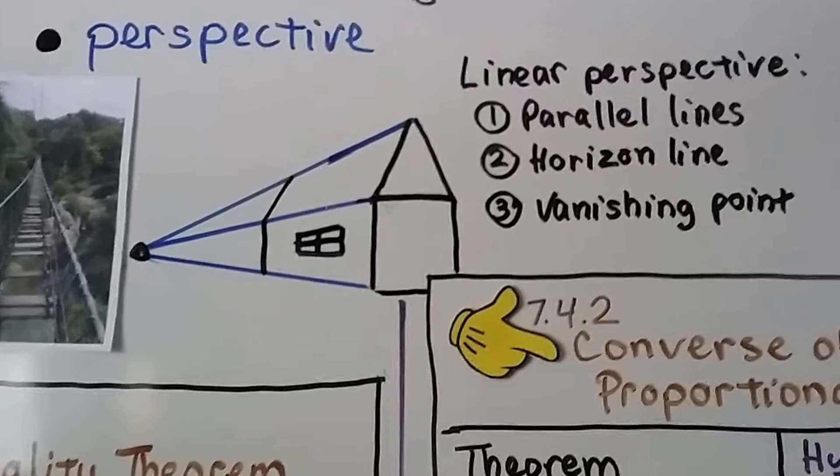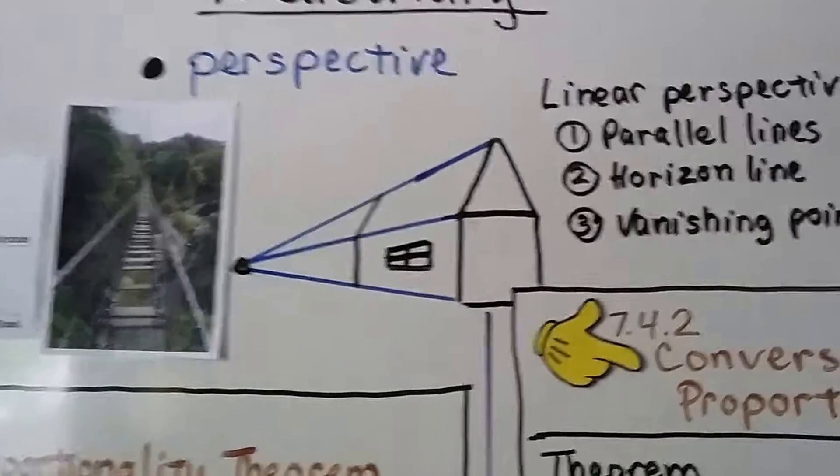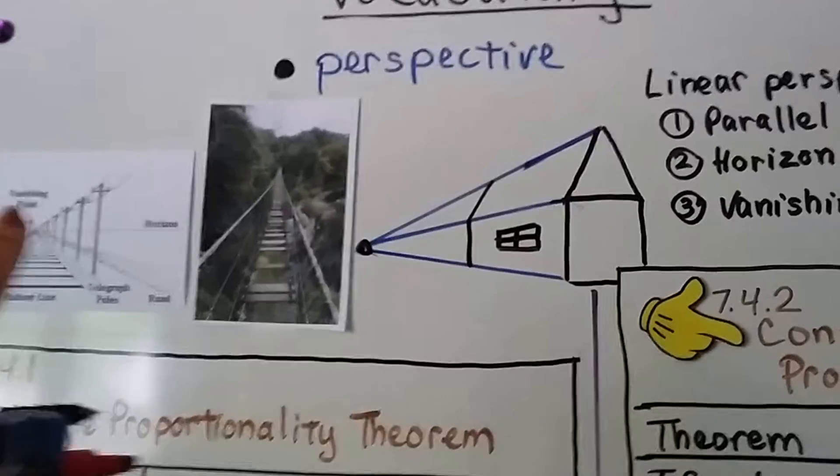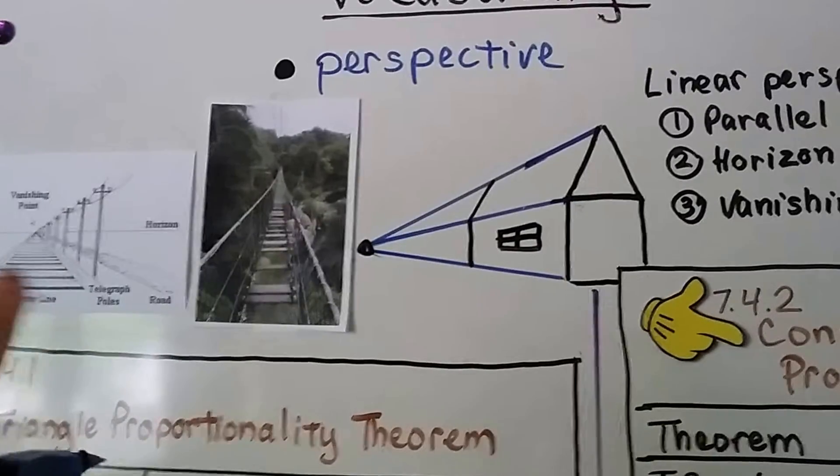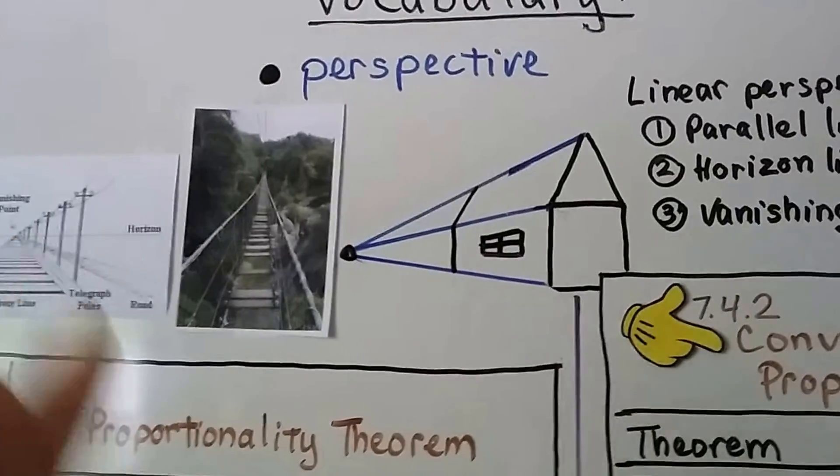Linear perspective needs three things. It needs parallel lines, horizon line, and a vanishing point. So it needs parallel lines like these railroad tracks and these railroad ties. It needs a horizon line in the background and a vanishing point.